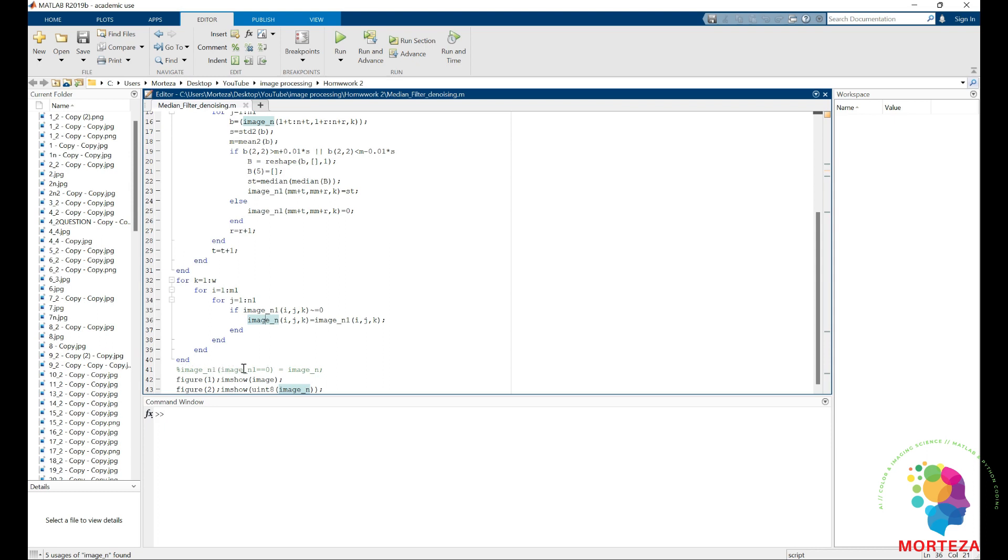And it's image N1. And I would say image N1, anywhere that is zero, replace them by image N, the original image. So this is sort of the opposite way of coding this part of the code.